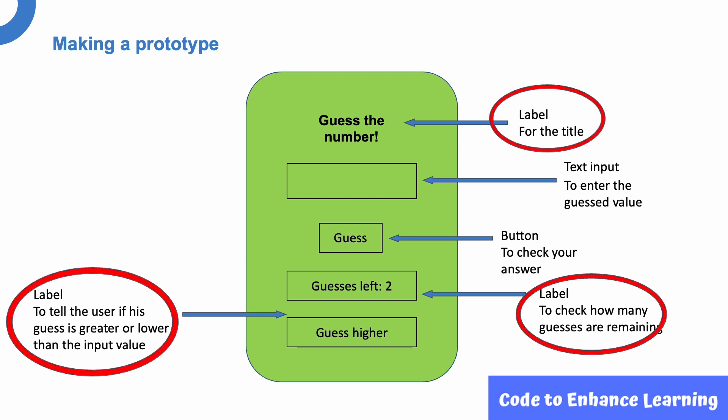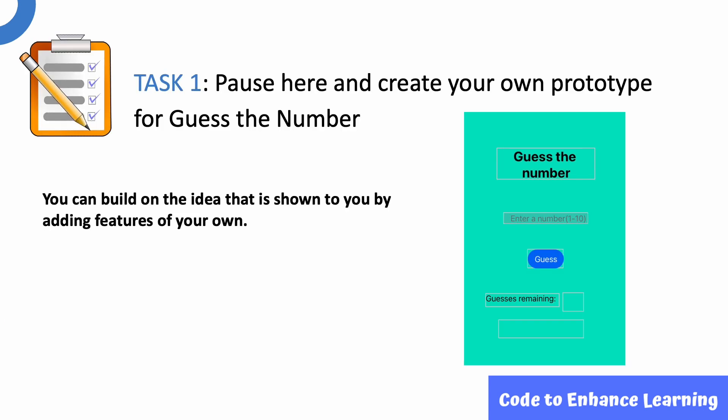There are three labels which we will be placing at different places. One for the title, the other to tell the user if his or her guess is greater or lower, and the third to check how many guesses are remaining. Let us come to Task 1. Here, you can pause and create your own prototype for the Guess the Number in your notebook. You can also build on the idea and add your own features after making the draft.